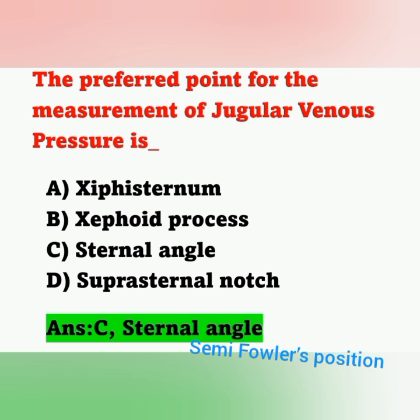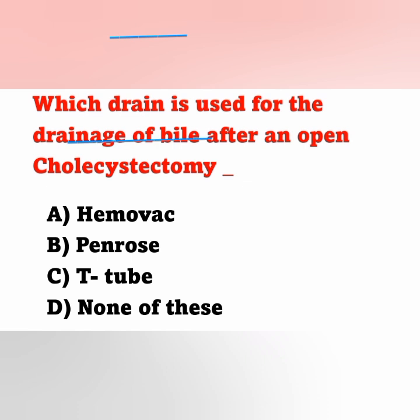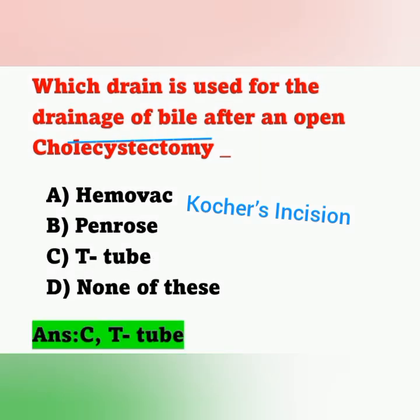Question 4: Which drain is used for drainage of bile after open cholecystectomy? Options: A) Hemovac, B) Penrose, C) T-tube, D) none of these. Cholecystectomy means surgical removal of the gallbladder. The correct answer is option C — T-tube. An important point: a Kocher's incision is performed in open cholecystectomy.